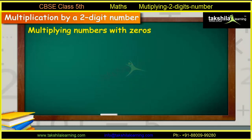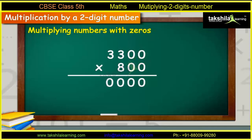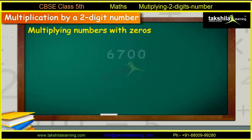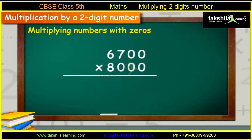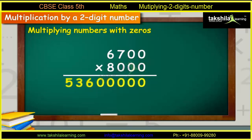If we multiply 3,300 with 800, their product will contain at least four zeros. Total number of zeros in 3,300 and 800 is 4. The answer therefore will be 26,40,000. If we multiply 6,700 with 8,000, their product will contain at least five zeros. Total number of zeros in 6,700 and 8,000 is 5. The answer therefore will be 5,36,000,000.